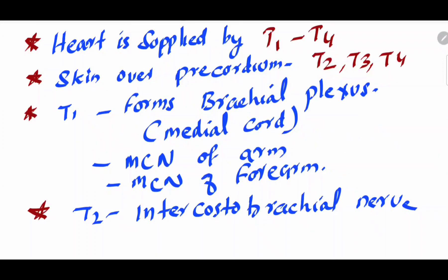To summarize the key points: first, the heart is supplied by T1 to T4 spinal nerves. Second, the skin over the precordium is supplied by T2, T3, and T4. Third, T1 forms part of the brachial plexus via the medial cord, giving the medial cutaneous nerve of the arm and medial cutaneous nerve of the forearm. Fourth, T2 — the intercostobrachial nerve — also supplies the medial aspect of the arm.